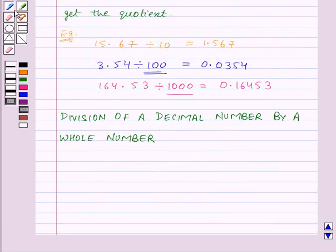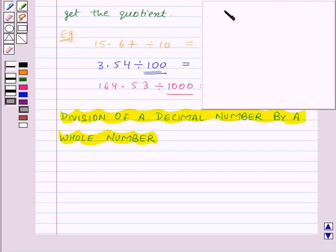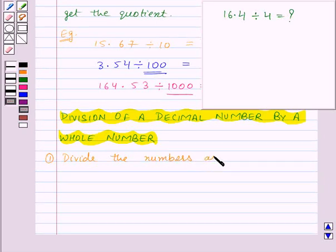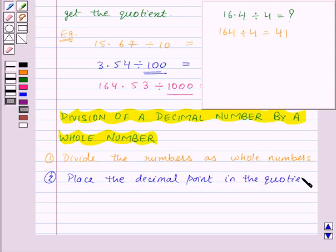Now let's see how to divide a decimal number by a whole number. Suppose we want to divide the decimal number 16.4 by the whole number four. We will follow certain steps. First of all, we will divide the numbers as whole numbers, so 164 divided by four will be equal to 41.